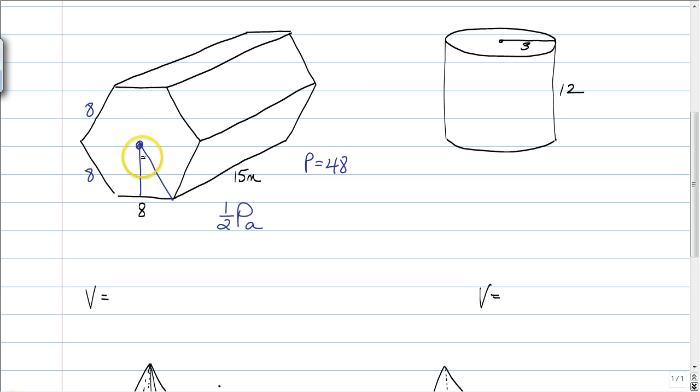What we need to do from there is find our apothem. Now, we know this top angle is always going to be 360 divided by two times the number of sides. So we know this is 30, which means this is going to be four and four. So our apothem is four root three.